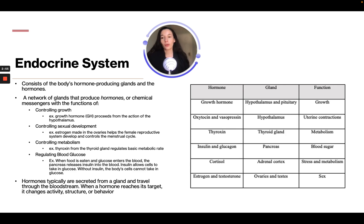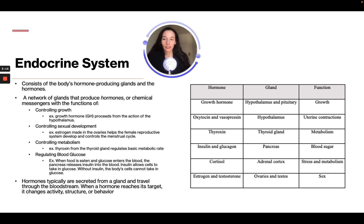Hormones also control metabolism. For example, thyroxin from the thyroid gland regulates basic metabolic rate. Regarding blood glucose, when food is eaten and glucose enters the blood, the pancreas releases insulin. Insulin allows cells to take in glucose; without insulin, the body's cells cannot take in glucose. Hormones are typically secreted from a gland and travel through the bloodstream. When a hormone reaches its target, it changes activity, structure, or behavior.